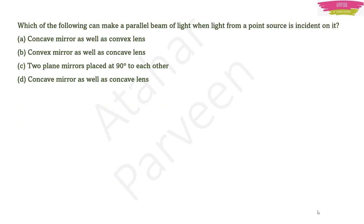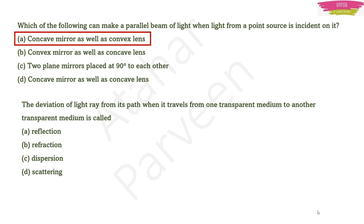Question: Which of the following can make a parallel beam of light when light from a point source is incident on it? The answer is a concave mirror as well as a convex lens — they can make a parallel beam of light. Question: The deviation of light when it travels from one transparent medium to another is called — refraction. They can twist the question many ways, but the answer remains the same.